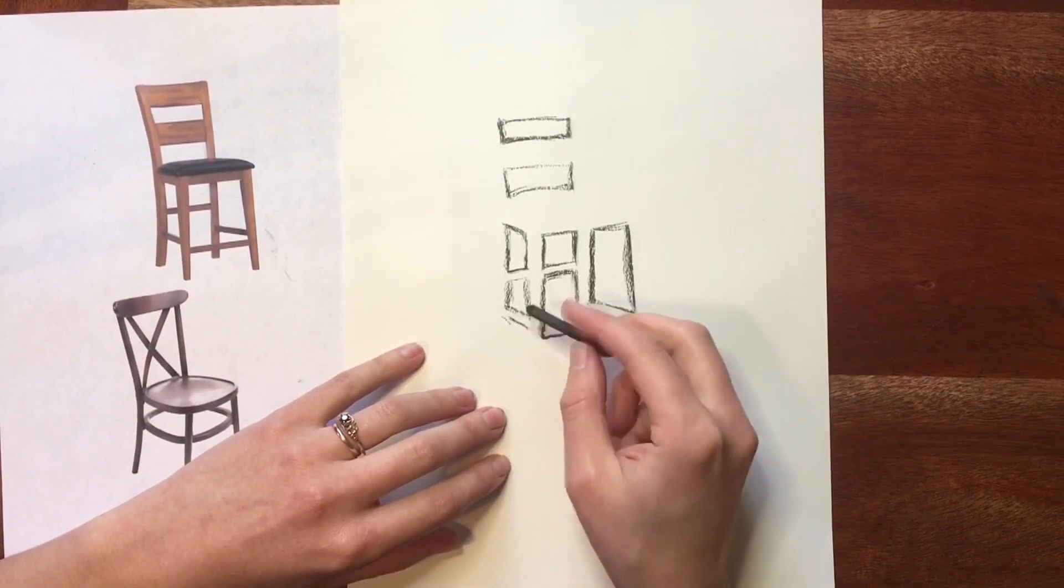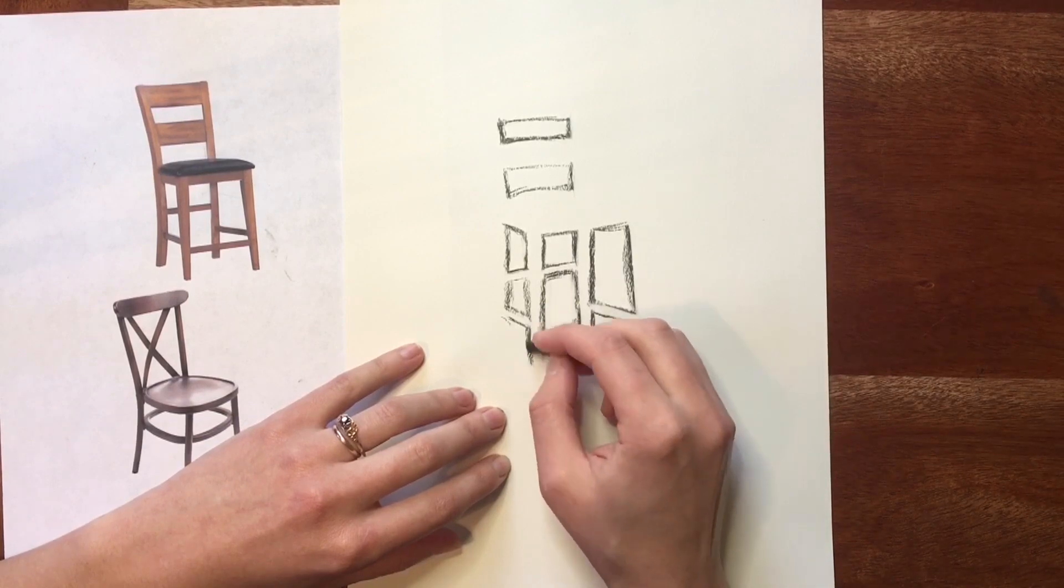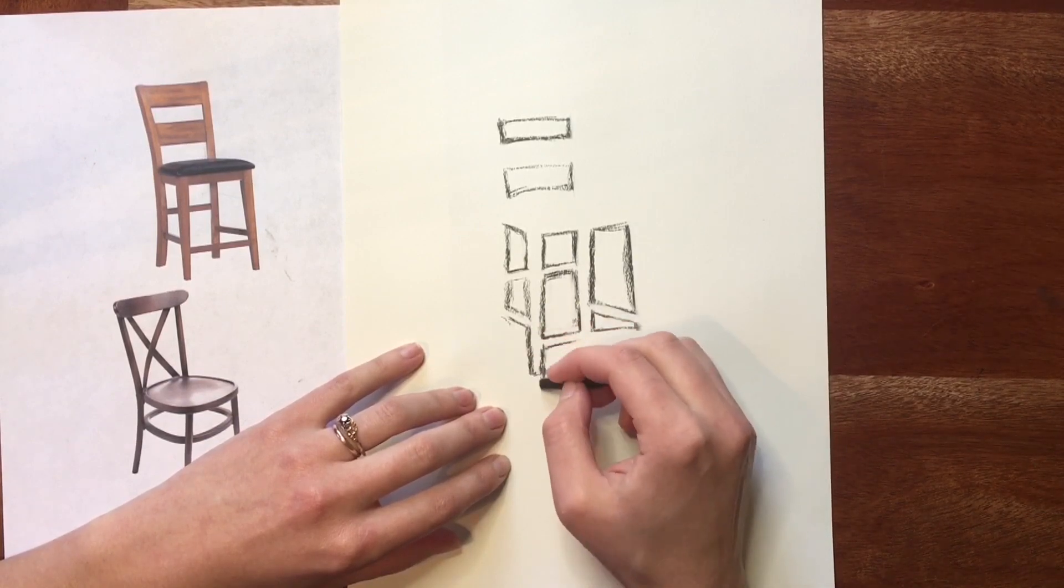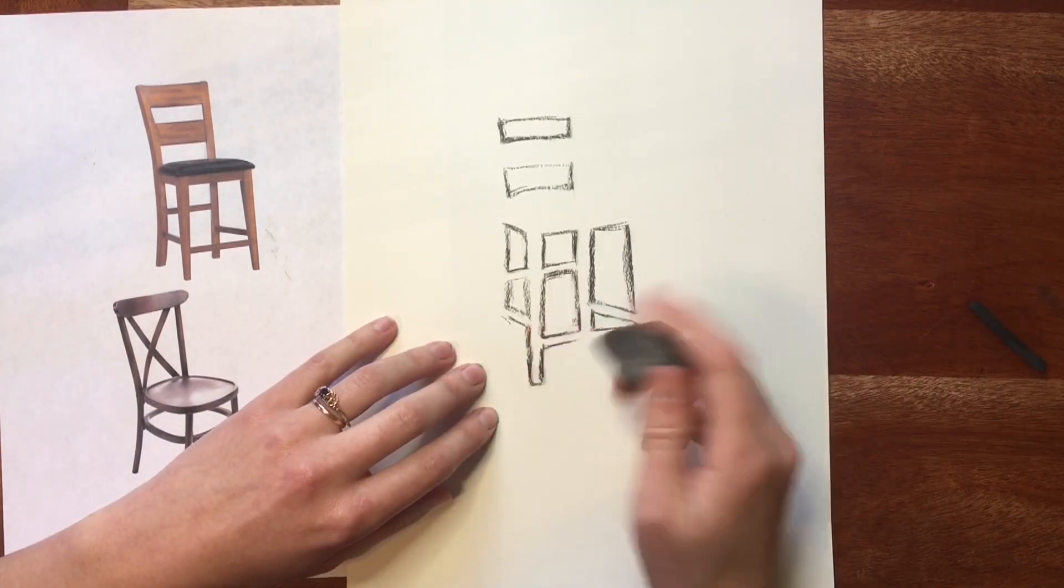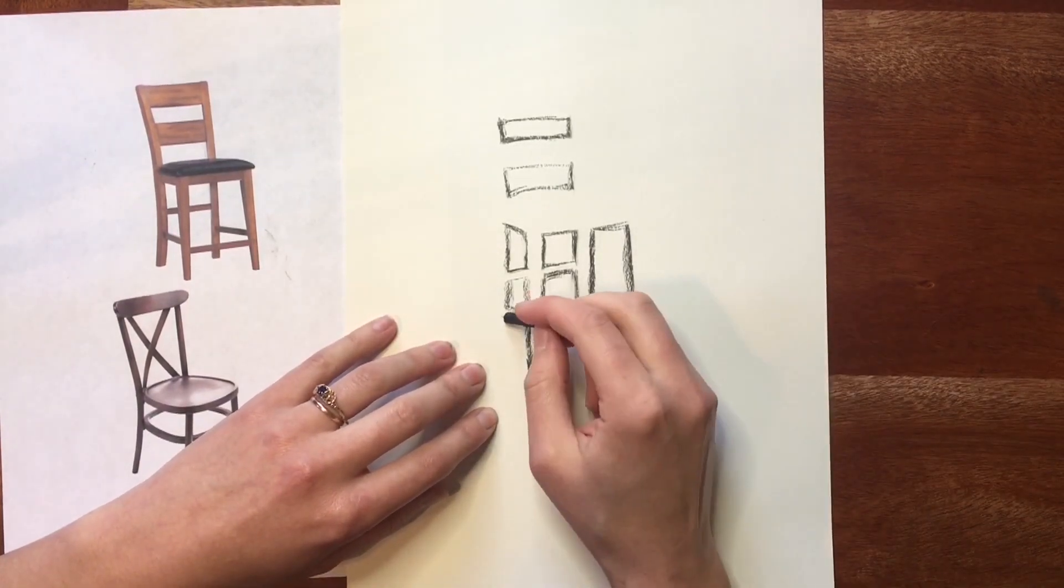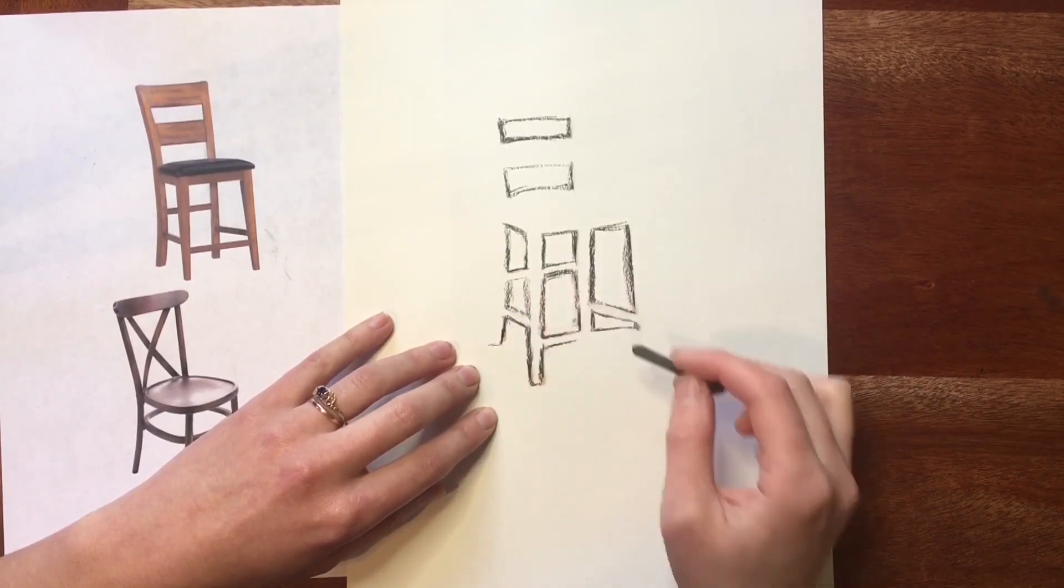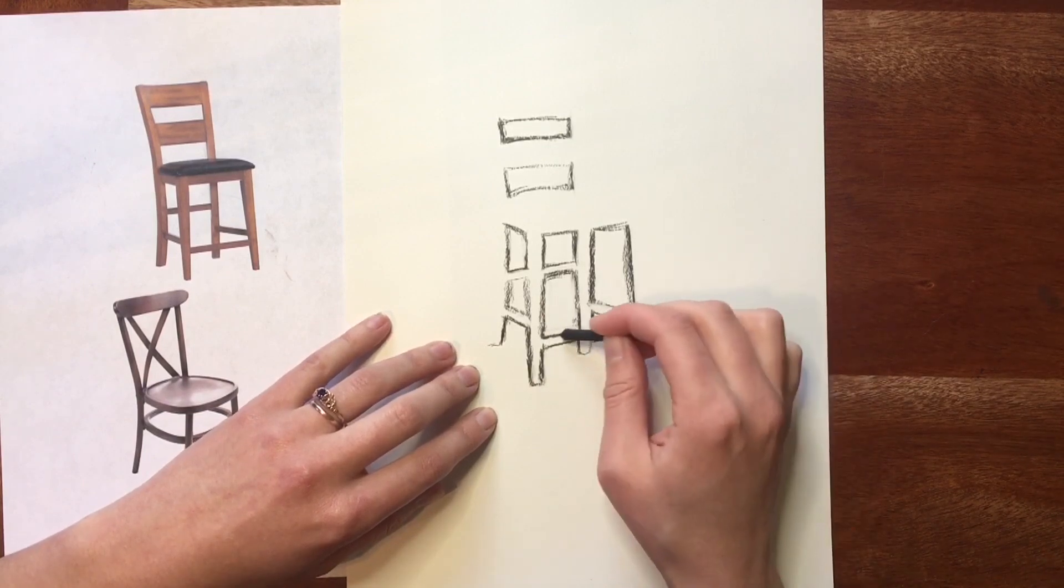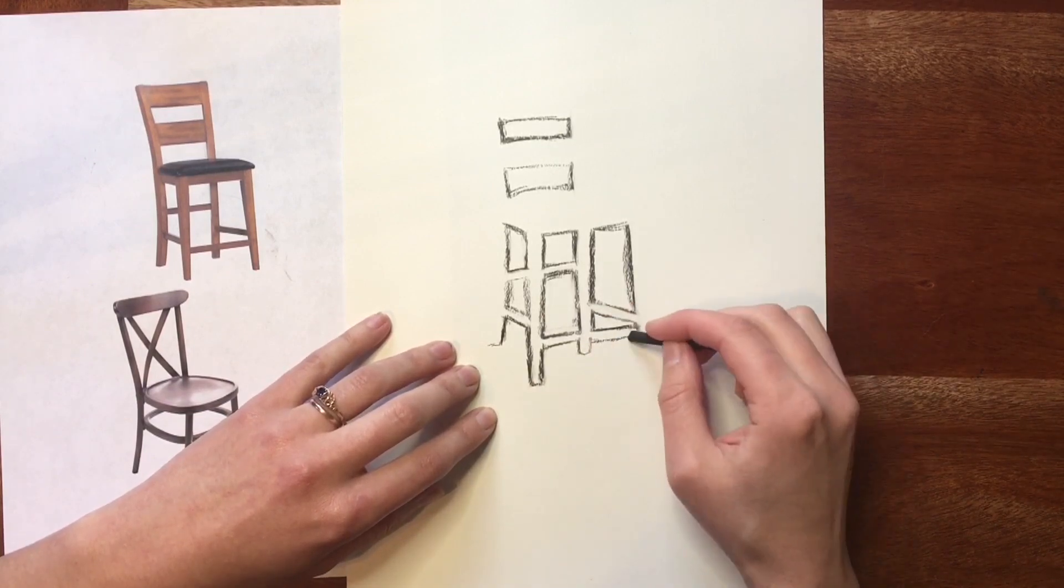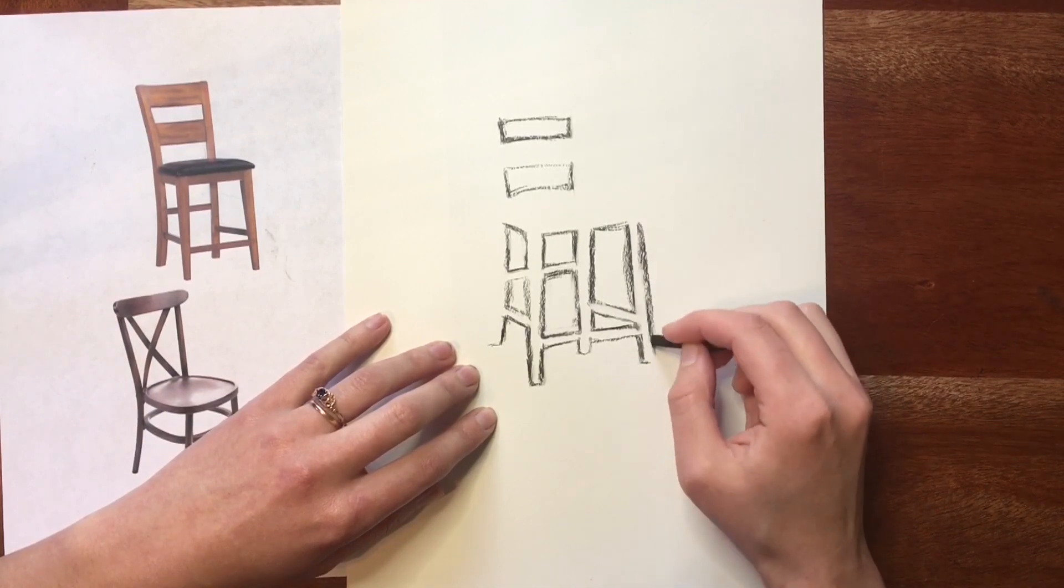So at this point we can kind of start to see this as a chair again because we're going to fill in the outline to kind of finish it all up. And what I'm actually doing right now is kind of flipping back and forth between thinking of positive and negative space. So I sort of need both and that happens in most drawing. You kind of need to understand both positive and negative space.